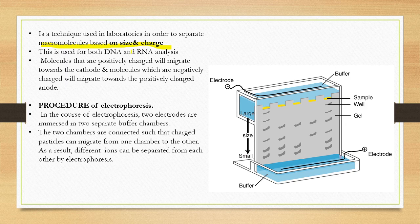Electrophoresis is basically used for the separation of DNA and RNA. Molecules that are positively charged will migrate towards the cathode, and molecules that are negatively charged will migrate towards the positively charged anode.